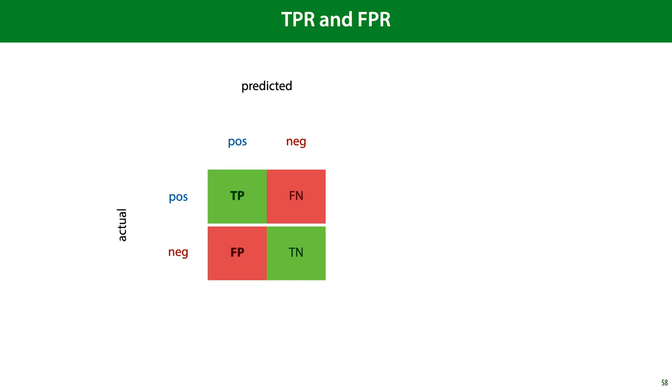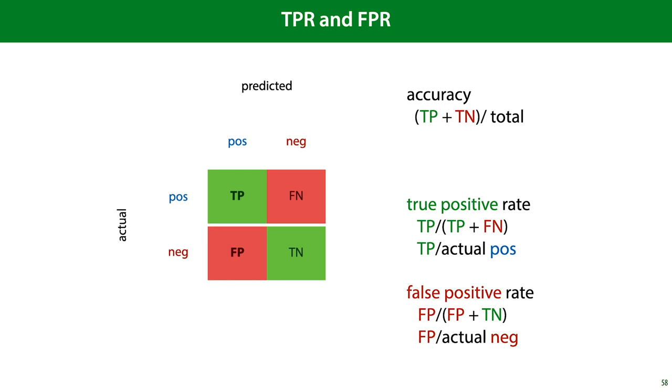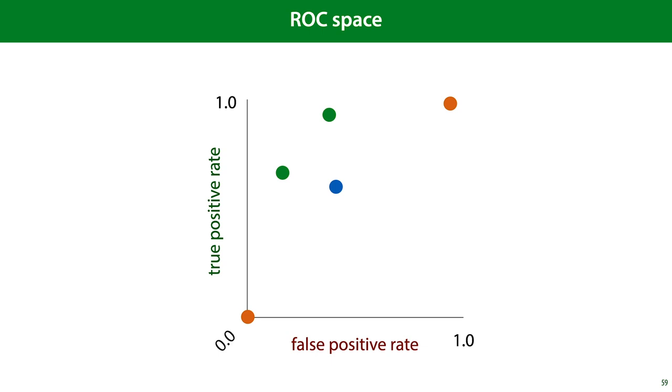We can do the same with two slightly different metrics, the true positive rate and the false positive rate. The true positive rate is the number of true positives divided by the actual positives, and the false positive rate is the number of false positives divided by the actual negatives. The true positive rate and the false positive rate can also be placed in a two-dimensional space, and this space we call the ROC space. ROC stands for receiver operating characteristic, a leftover from its invention in World War II, when it was used to improve the detection of Japanese aircraft from radar signals.